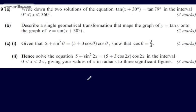This is question 9. In part A, we're asked to write down the two solutions of the equation tan of x plus 30 degrees is equal to tan of 79 degrees in the interval where x is between 0 and 360 degrees. The question carries two marks.